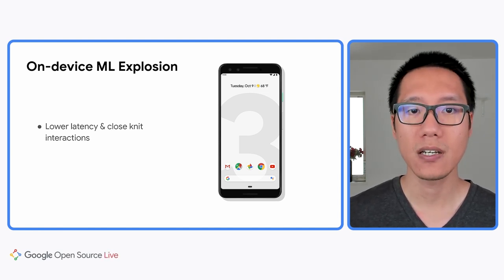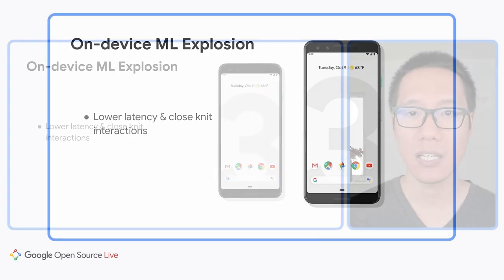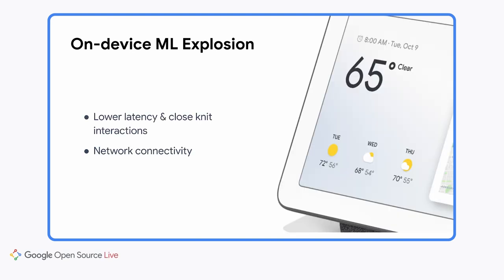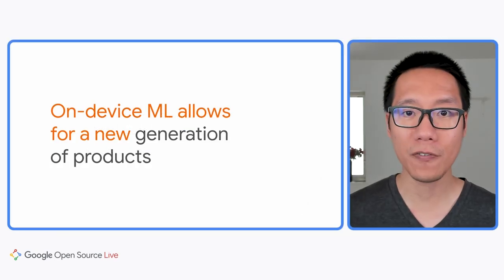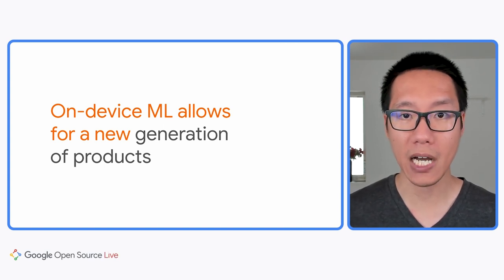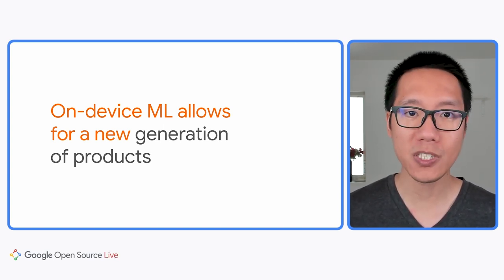On-device machine learning refers to a subfield of machine learning that trains and deploys machine learning models on edge devices. But why is it important? There are several reasons. The first one is latency — if you want to build a feature that requires real-time data processing, like processing video feed, you need to run the models on the devices. The second reason is offline availability — you can use the feature even when there's no internet connection. And the third reason is protecting user privacy — with on-device machine learning, you don't need to send sensitive user data to the server.